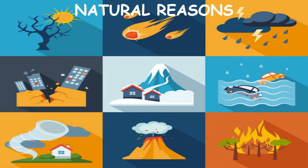Earthquakes also release some poisonous gases and water vapors from inside the earth into the air. Cyclones mix dust, soil, garbage, pollens, and microbes with the air, causing it to pollute. Forest fires release carbon dioxide, sulfur dioxide, hydrogen sulfide and smoke into the air. Microbes, spores of bacteria, fungi, etc. are also mixed with the air causing it to pollute.